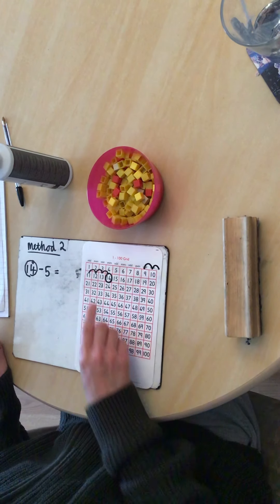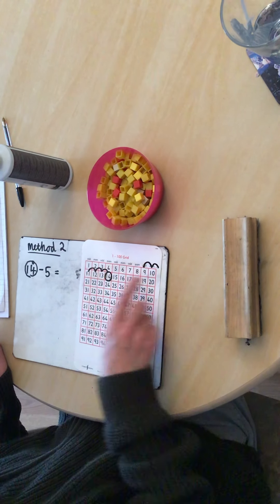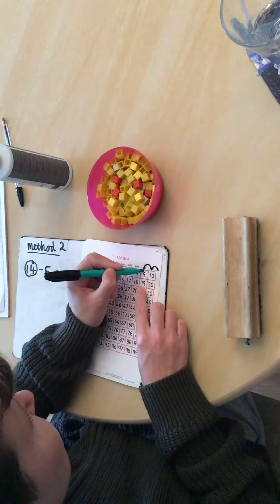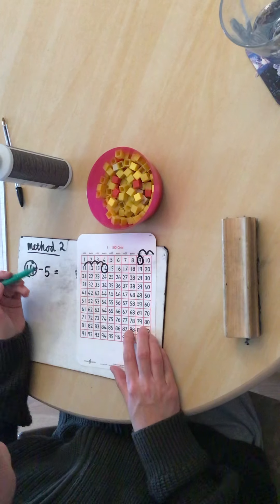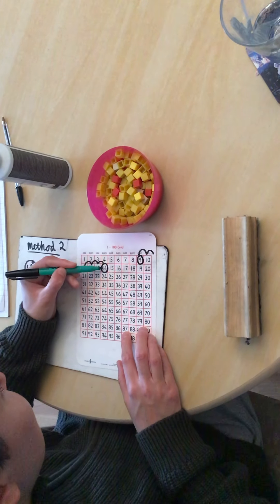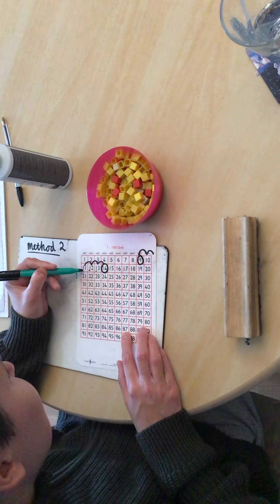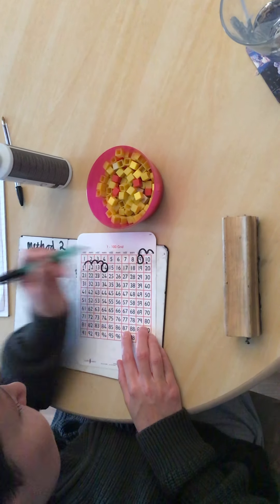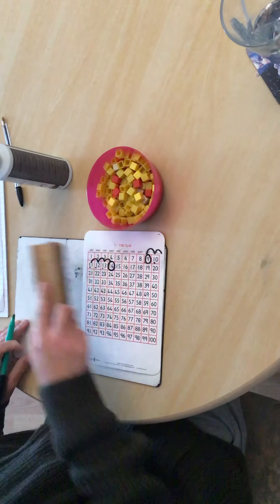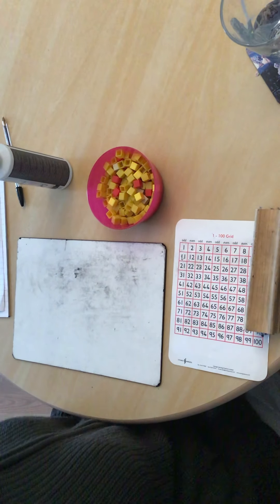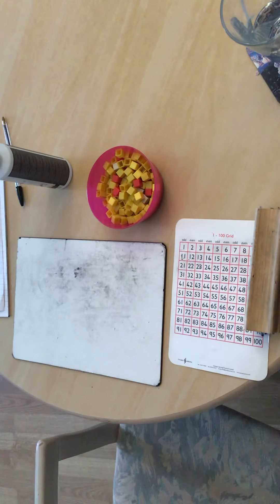And I need to count back 5. So we can do our jumps to the 5. So we're going to go 1, 2, 3. And now I need to go back here, because I'm going back. So I'm at 3, 4, 5. So 1, 2, 3, 4, 5. I've landed on 9. I've landed on 9. And I can check I've taken away 5. I can do my dots. So I'm at 14. 1, 2, 3, 4, 5. The answer is 9.